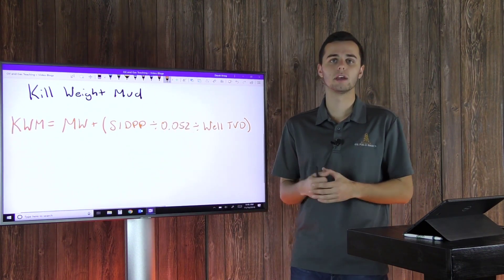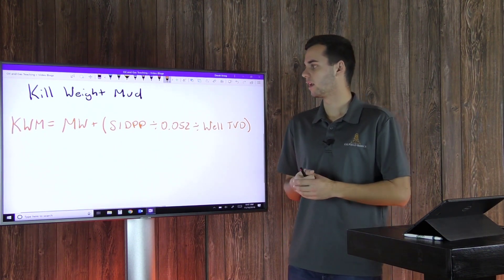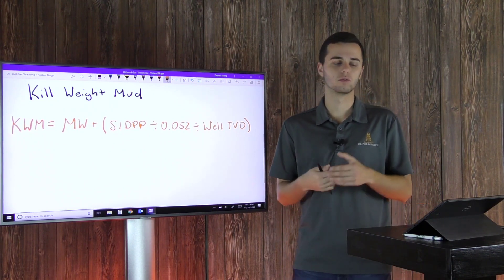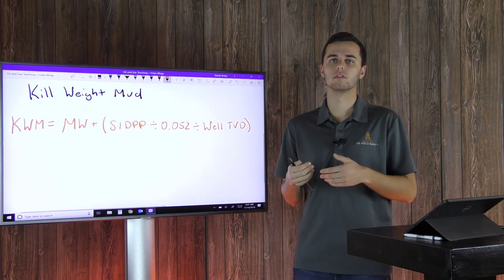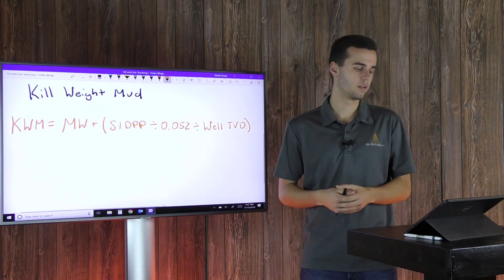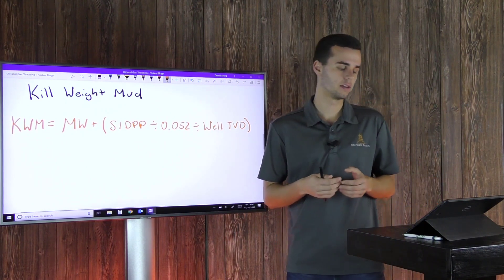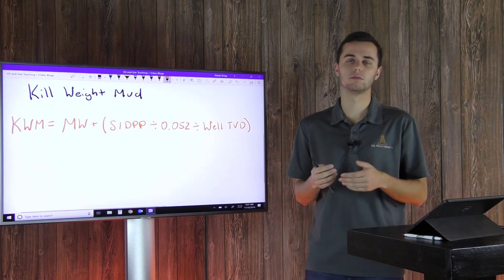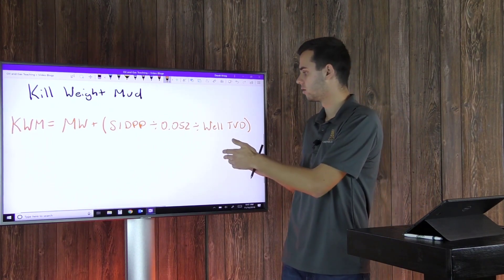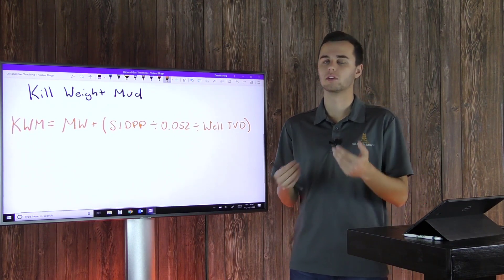Alright, so now let's go through an example. Say you're drilling on 9.5 ppg, that's your mud weight, and you get an influx of formation fluids into your wellbore, and so you need to balance that formation pressure with your mud weight. And so you'll have to figure out what your shut-in drill pipe pressure is. So say in this case, it is 600 psi. And you'll divide that by your 0.052, and then you'll divide that by your well TVD. So let's say we're at 10,000 feet, that's our true vertical depth.